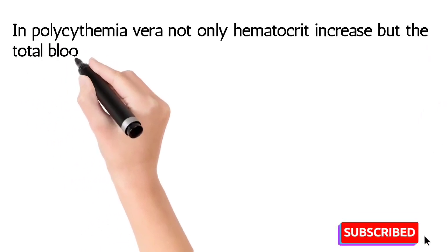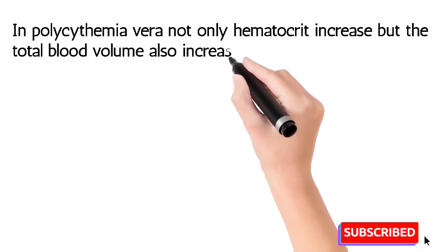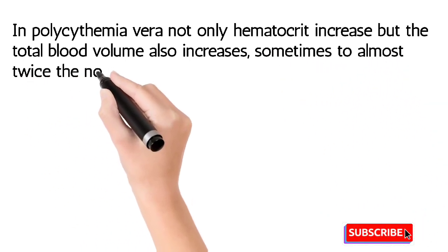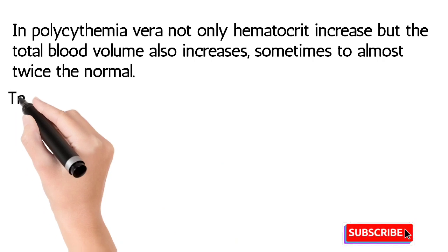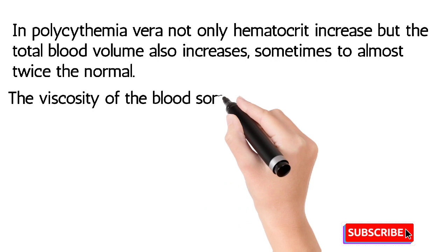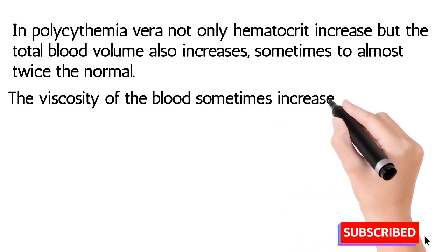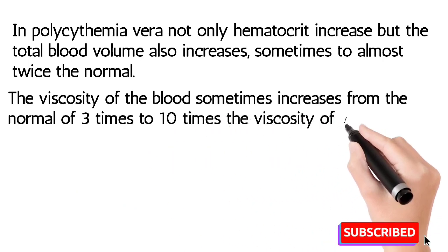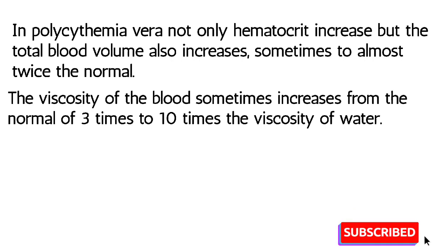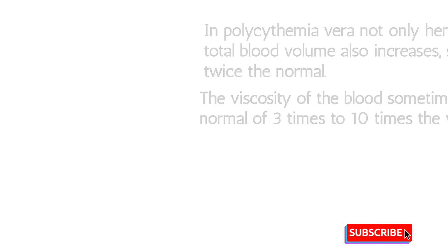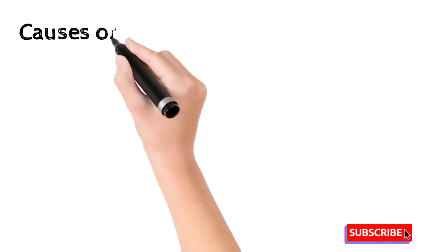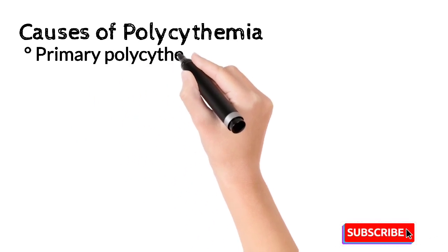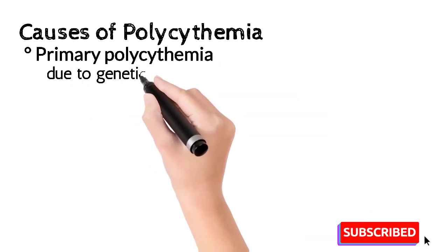In polycythemia vera, not only is the hematocrit increased, but the total blood volume is also increased. WBCs and other blood cells are also produced, sometimes at almost twice the normal range. The viscosity of the blood can increase from the normal three times to ten times the viscosity of water, which is not a bearable condition for the body.